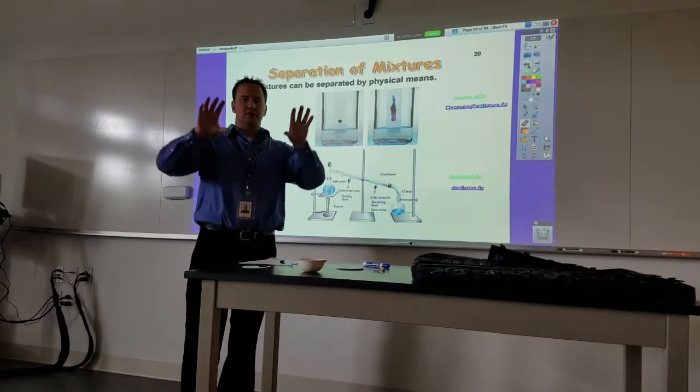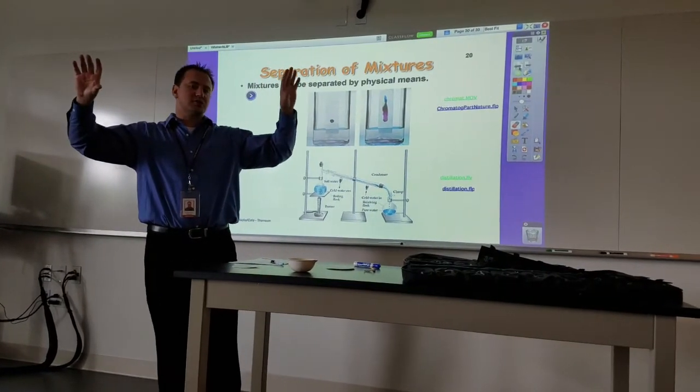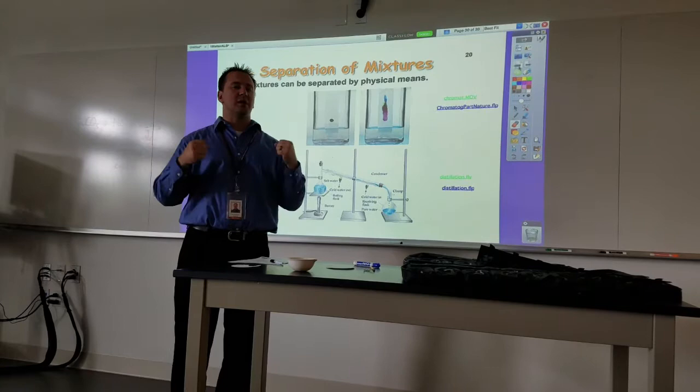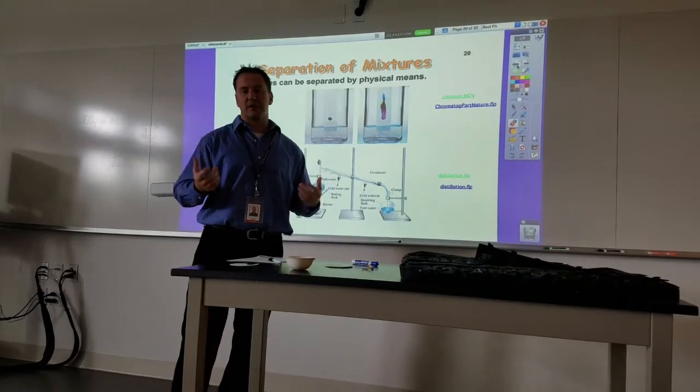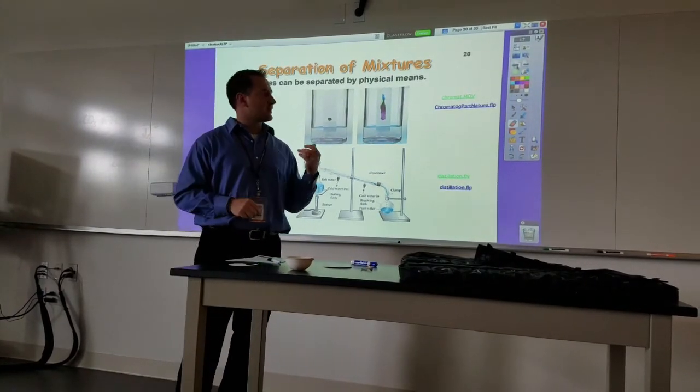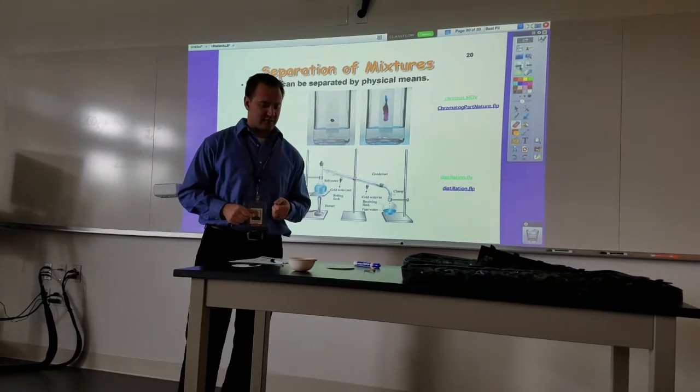The way you can separate something into either a mixture or a pure substance is by whether or not it can be physically separated. If it can be physically separated, we have a mixture. If it can't, then we have a pure substance.